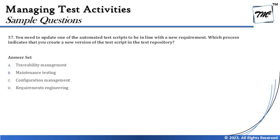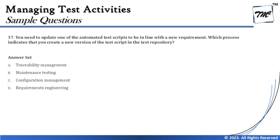Moving to Question 37: You need to update one of the automated test scripts to be in line with a new requirement. Which process indicates that you create a new version of the test script in the test repository? This question is a little tricky. If things are unclear, break the question into multiple parts. We are talking about updating an automation script to match a new requirement and creating a new version of it in the repository.